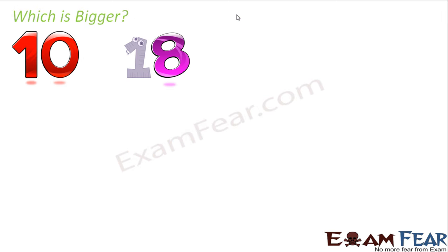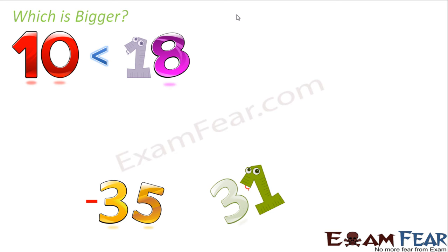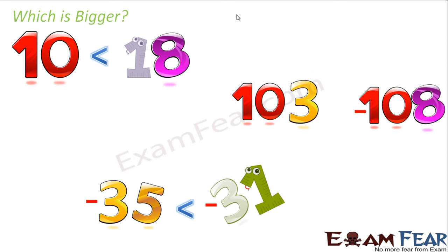Let us now look at some examples with this idea in mind. Whenever you look at a number line, just think: 18 or 10 — which is located towards the right? 18 is located towards the right, so 18 is greater than 10. Similarly, comparing minus 35 and plus 31 — definitely plus 31 is greater because all positive numbers are located towards the right. Remembering that simple tip can help you decide which is bigger so easily.